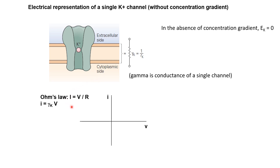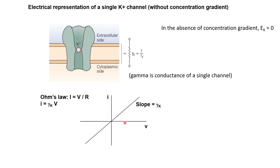The exact value of current is V over R, or equivalently V times γK, since 1/R is conductance. So current is simply γK times V, which corresponds to a straight line through the origin. γK corresponds to the slope of this IV curve. If you have a larger value of V, you will have a larger I equal to γK times V.